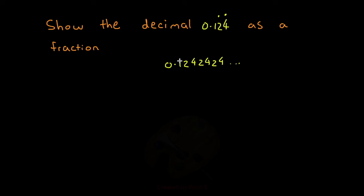So if we didn't have this 1 right here, things would be pretty simple, right? We just have to multiply by 100 and then subtract. But unfortunately for us, we do have the 1. So how do we go about making a fraction from this? Well, I'll do it first, and then I'll explain at the end. So for our first step, as usual, we'd set this equal to x. So x is equal to 0.1242424, and so on.